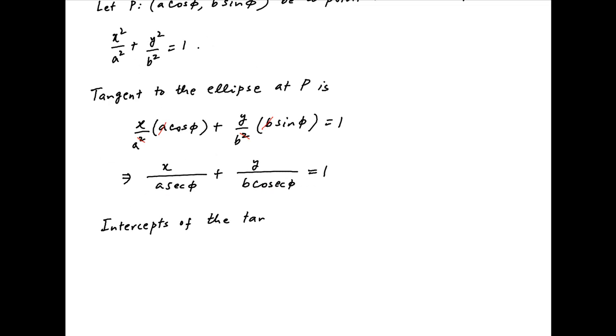Therefore, the intercepts of the tangent to the ellipse at this point on the x-axis is a sec phi and on the y-axis is b cosec phi. Therefore, the area of the triangle formed by the intercepts and the tangent is: